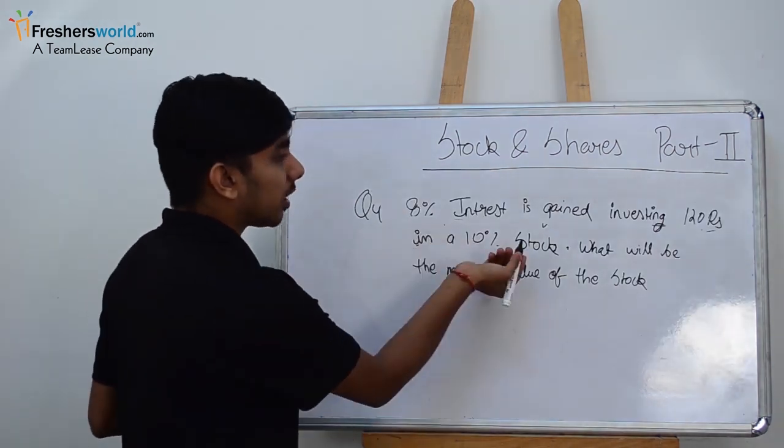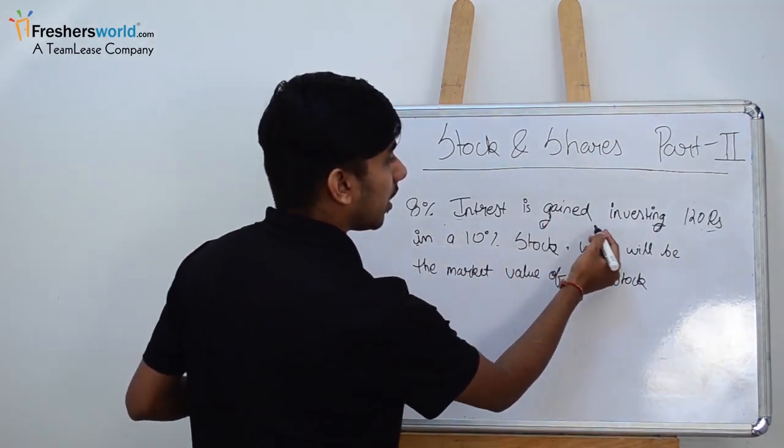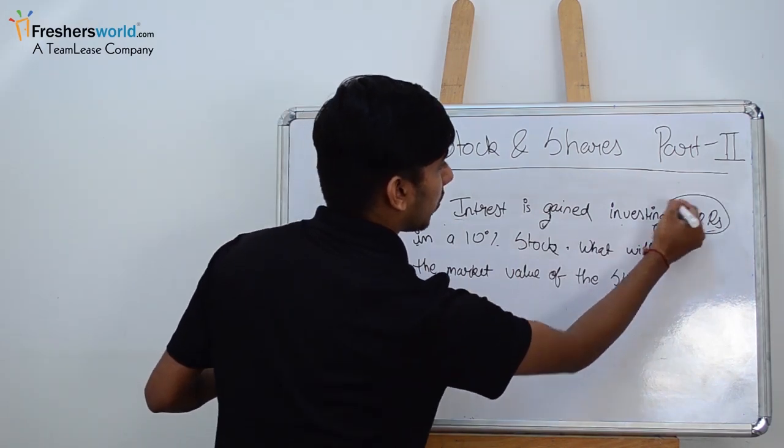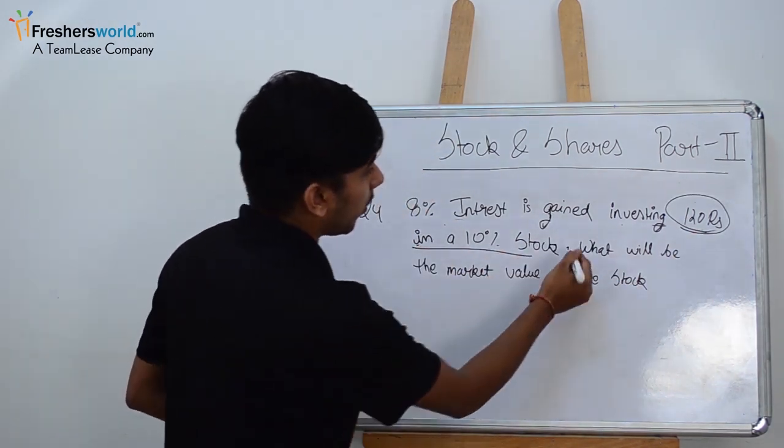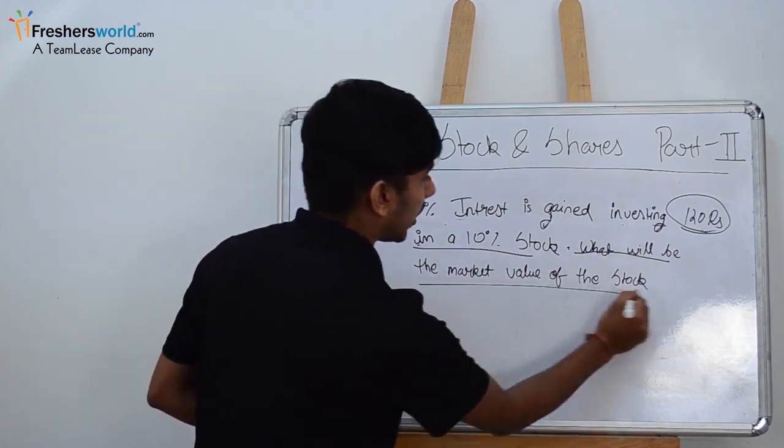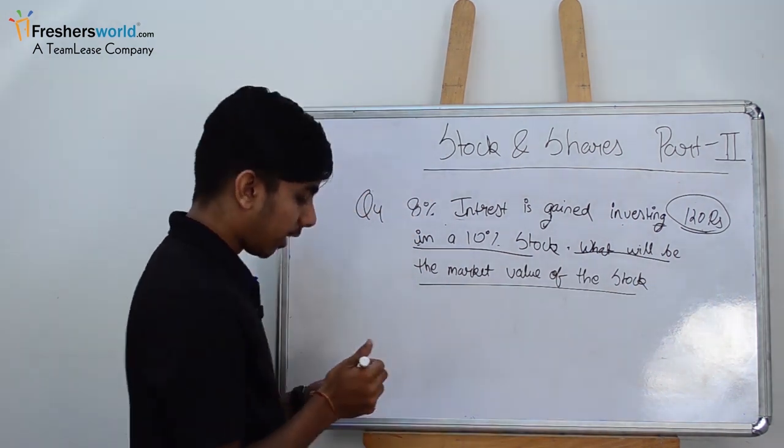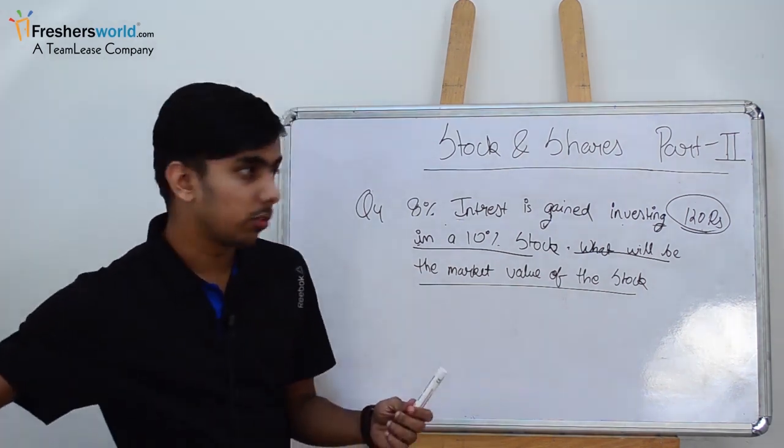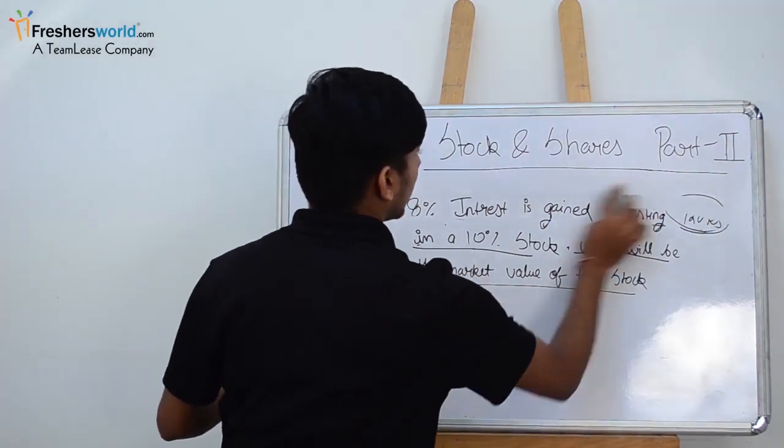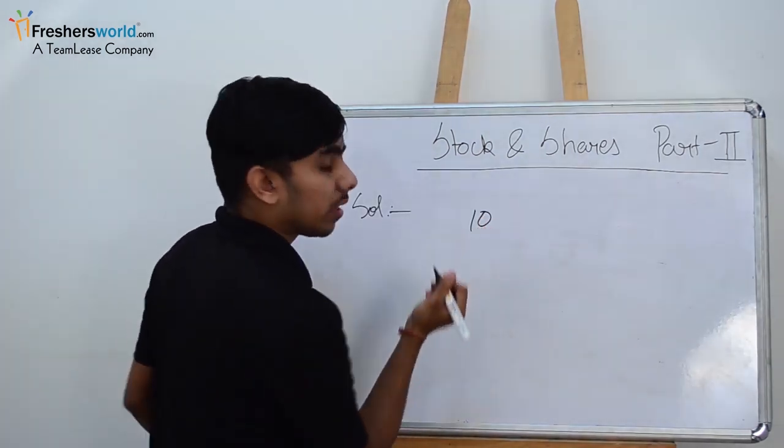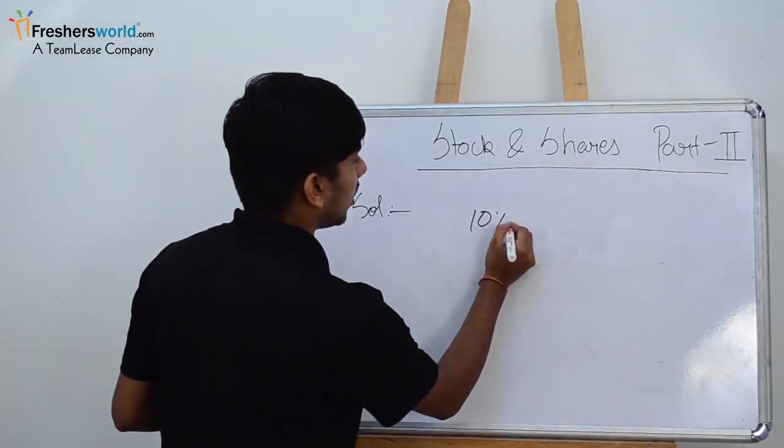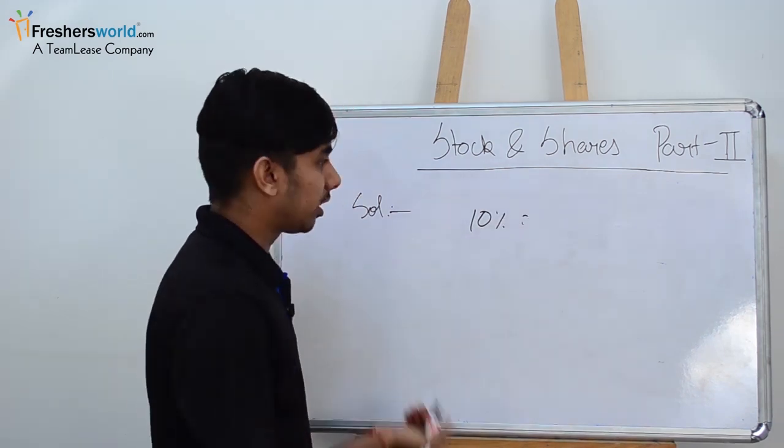Let's move forward to the fourth question. The next question is: 8 percent interest is gained by investing 120 rupees in a 10 percent stock. So what will be the market value of that stock? We have to find the market value.